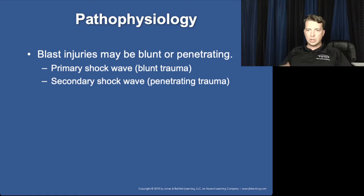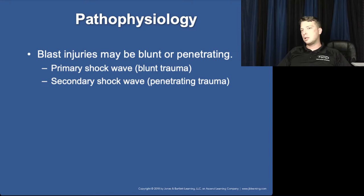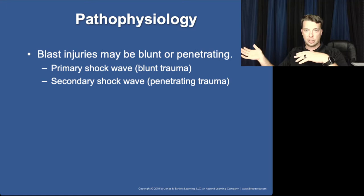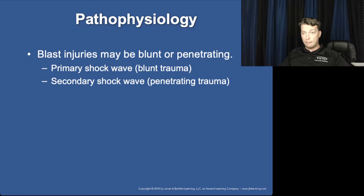Blast injuries involve three mechanisms: the primary blast — a pressure wave causing over-pressurization of hollow organs, which can pop the lungs; the secondary blast — shrapnel creating penetrating trauma; and the tertiary — the body being thrown against a solid object, causing blunt or penetrating trauma.